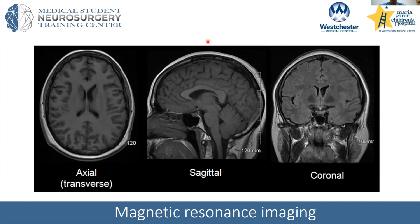Another cause: if a shunt has been in for many years, the body may form calcifications around it. As the child or adult grows, there's eventually a tipping point where there's too much tension on that calcified shunt and it will break — that's another example of shunt failure. Great questions — let's now focus more on MRI.